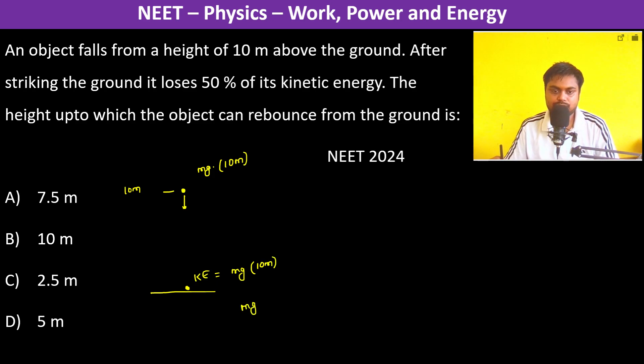It is remaining M × G × 5 meters because that's half of the original kinetic energy. So now this much energy is remaining. The height to which the object can rebound from the ground is: